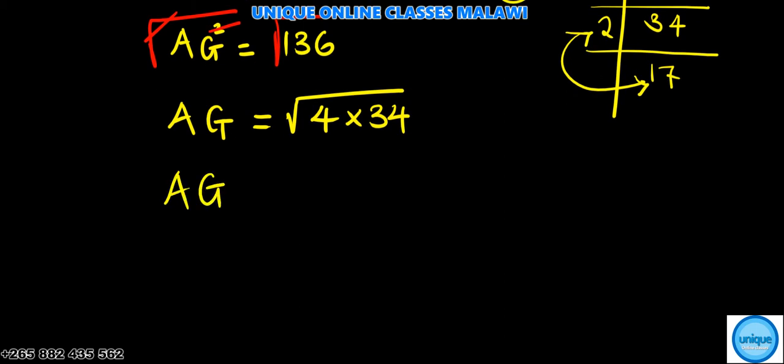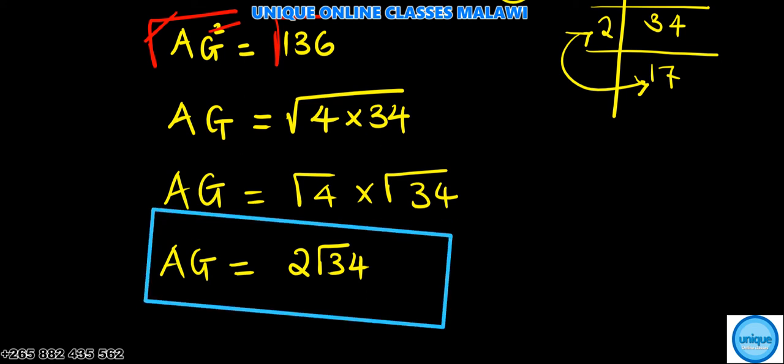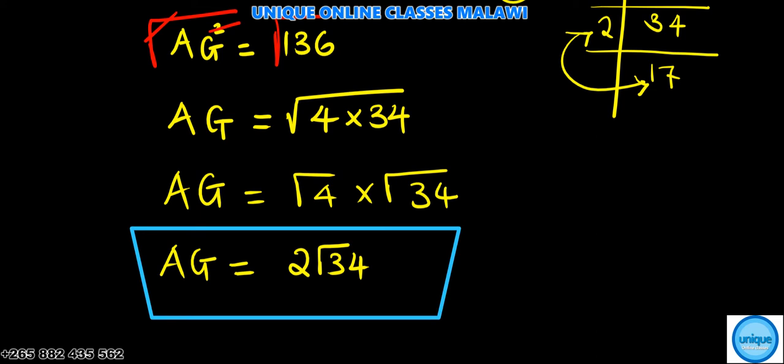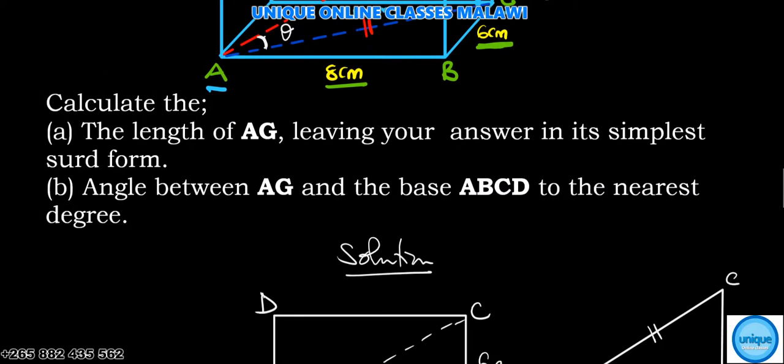So AG equals square root of 4 times square root of 34. Following laws of surds, we have AG equals 2 times square root of 34. So AG is 2 times square root of 34.